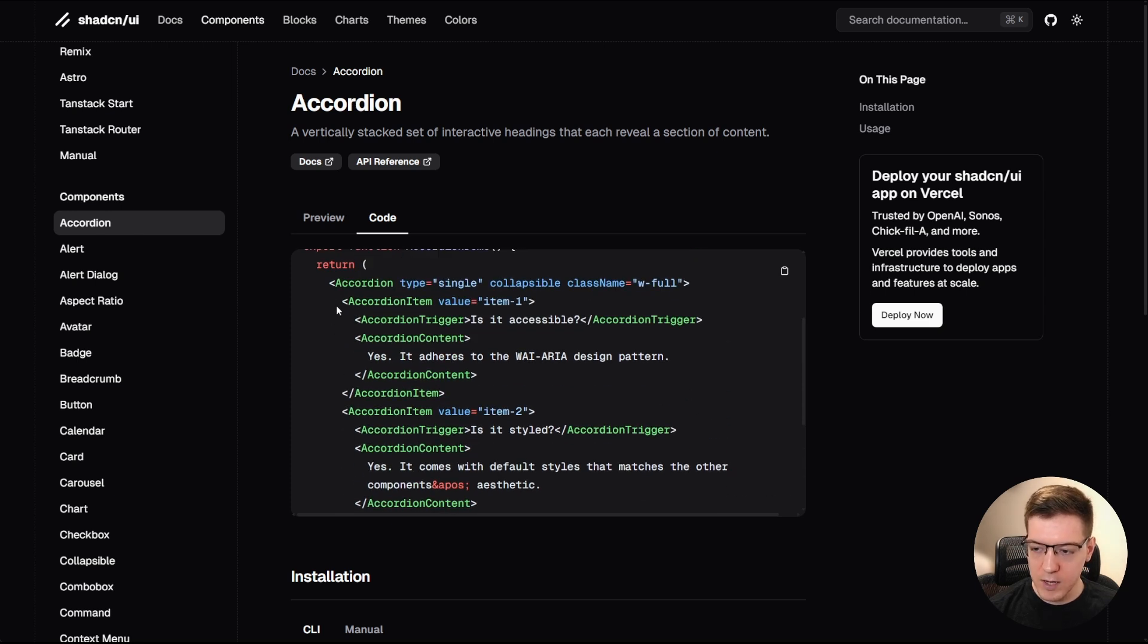So if you look at the code here, for example, they have the accordion and the accordion provides the functionality. And then you have the accordion item. And then inside of the accordion item, you have the accordion trigger. And this triggers the accordion. And this shows when you trigger it on and off. And all of this is accessible. And this is the best way to build component libraries where you compose the components together.